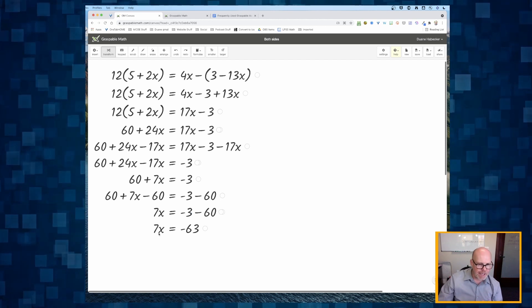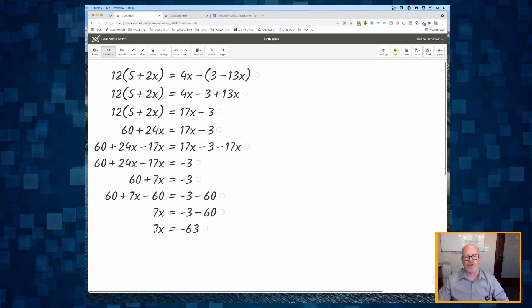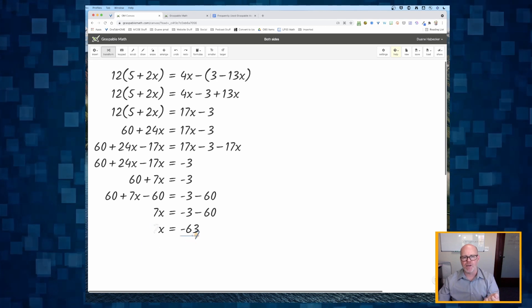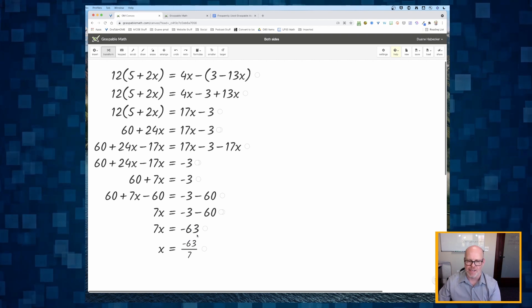Now, again, two ways to show my next step. Either I can click and hold on that times 7 and drag it across and it becomes divide by 7.